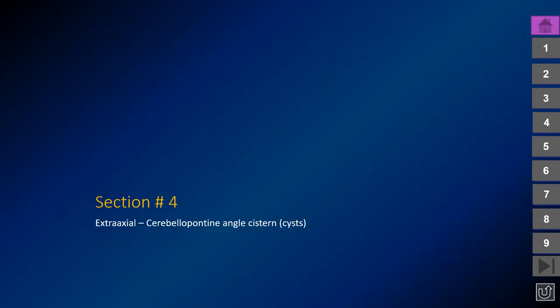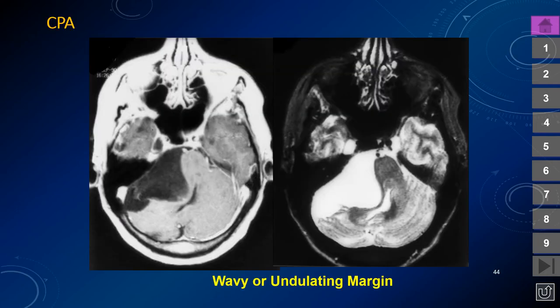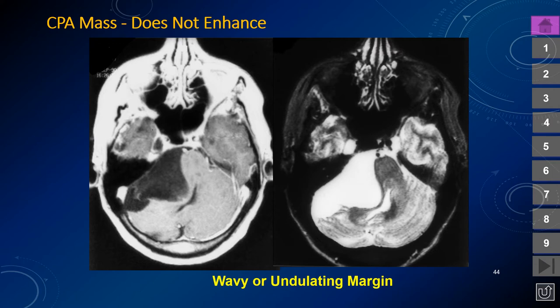The next lesion in the posterior fossa cerebellopontine angle cistern is the cystic category. This CPA mass does not show contrast enhancement because it is an epidermoid inclusion cyst. Epidermoid inclusion cysts consist of a living epithelial lesion that produces squamous epithelium; the contents are dead skin flakes — desquamated squamous epithelium accumulating over decades. Because the contents are dead material, there is no mechanism for contrast enhancement. Epidermoid inclusion cysts are notorious for having a wavy or undulating margin, and the lesion may surround the basilar artery and other vessels and nerves in the cistern.